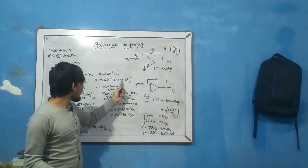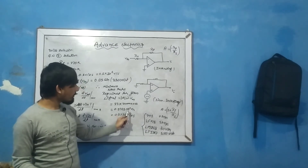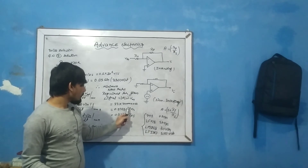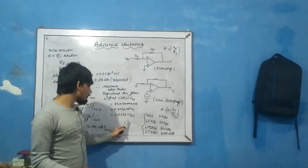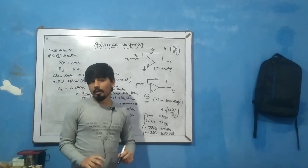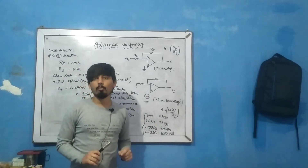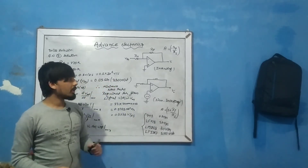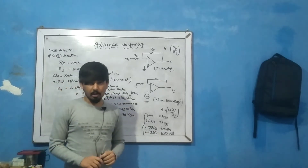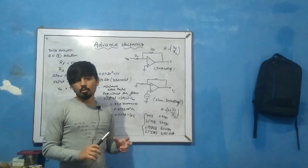Substituting the values: RF/R1 = 330/10 = 33. So the minimum slew rate = 33 × ω × vm. Calculating this gives approximately 0.575 × 10⁶ volt per second, which is about 0.575 volt per microsecond.